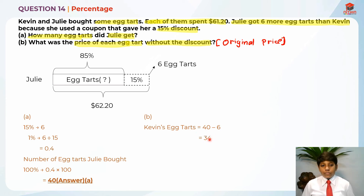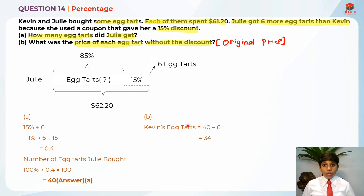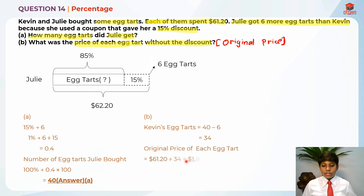He also spent the same amount of money on the egg tarts. So in order to find the original price of the egg tarts without the discount, we just need to take $61.20 divided by Kevin's number of egg tarts, which is 34. We can use Kevin because he did not have any discount or coupon. So the original price of each egg tart is $61.20 divided by 34, which is $1.80. So this is the answer for Part B.